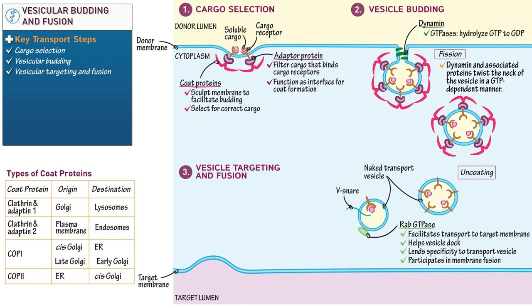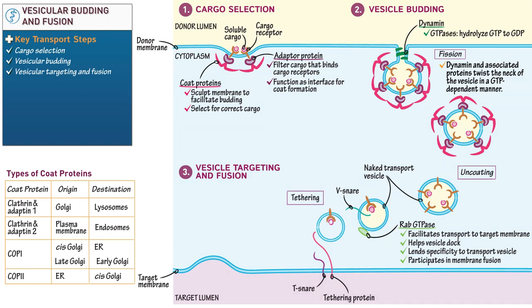Now on the target membrane, draw a filamentous tethering protein; next to it, draw a T-snare. Show the tethering step as follows: show that the Rab-GTPase on our vesicle binds to the tethering protein and moves closer to the target membrane. Both of these proteins must match in order for this step to proceed. Indicate that when the tethering protein and Rab-GTPase match, the vesicle enters the docking phase. If they do not match, the vesicle dissociates and Rab-GTPase continues the search for its correct destination.